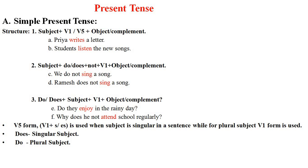Now we are going to talk about simple present tense. The structure is: subject plus first form of verb or fifth form of verb plus object or complement. For example, 'Priya writes a letter' — here 'Priya' is the subject, 'writes' is the fifth form of the verb, and 'a letter' is the object. Second example: 'Students listen to the new songs' — 'students' is the subject, 'listen' is the first form of the verb, and 'the new songs' is the complement.